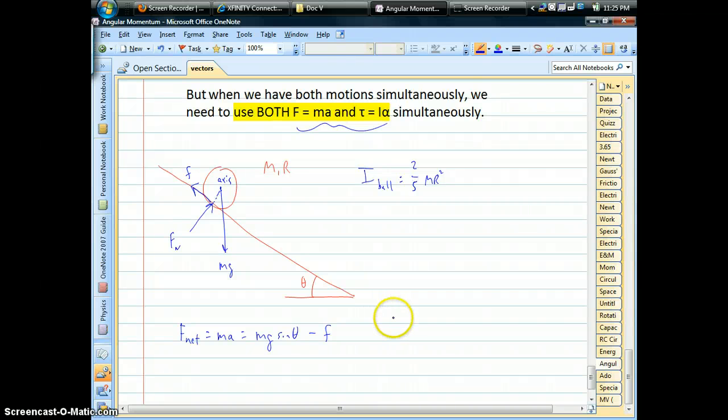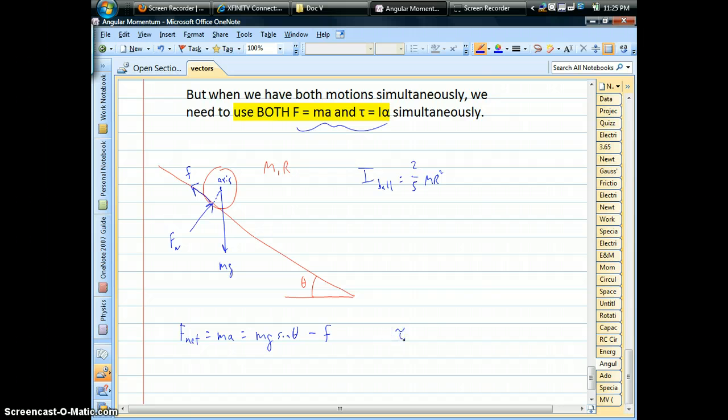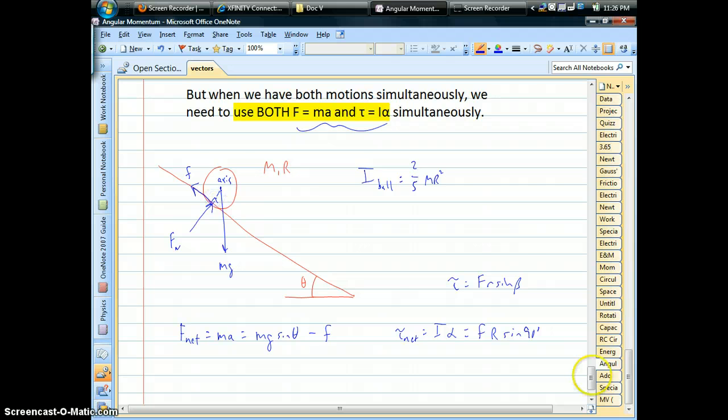Now, the part that a lot of people forget or kind of get stuck on is the rotational part. Torque equals I alpha. Well, in general, torques, we use this idea of FR sine of some angles. Okay. Well, the force causing the torque is friction. It's a radius away from the axis of rotation, which is the center of the ball. And then those two lines form a nice 90 degree angle right there.